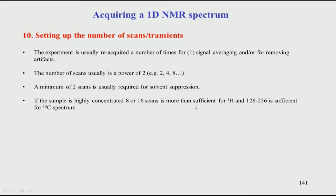From a practical standpoint, in organic chemistry and standard biomolecular peptide samples, typically 8 to 16 scans are given — this is for a roughly 1 millimolar sample concentration. For carbon-13, however, it is very insensitive compared to hydrogen because the gyromagnetic ratio is about 4 times less and the natural abundance of carbon-13 is also low. Because of that, you need more scans. For a good concentration such as 5 to 10 millimolar, you typically need about 256 scans to record a good carbon-13 data set.